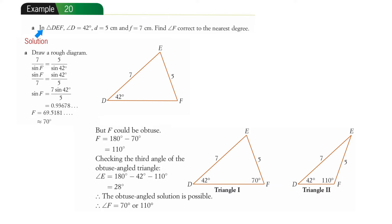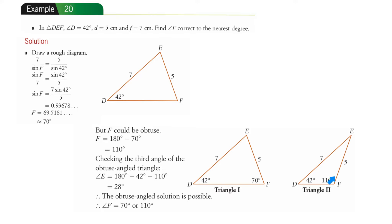Example 20: In triangle DEF, angle D is 42 degrees. Side d is 5 centimetres and side f is 7 centimetres. So d is opposite angle D — that's 5 — and small f is opposite angle F, and that's 7. Find angle F correct to the nearest degree. As we saw in the previous example, you can also construct another triangle that meets the same dimensions.